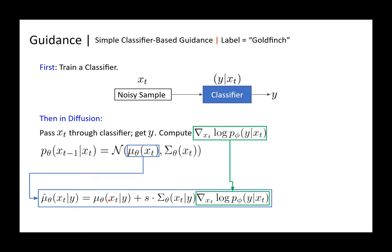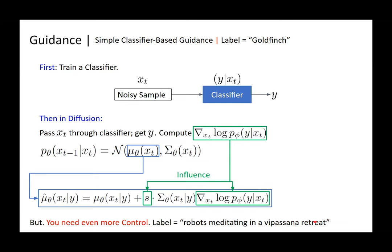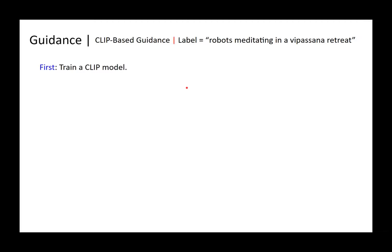The scale factor lets you control how much guidance you want. But the problem with classifier-based guidance is you're limited to a single class label — what if you want a more detailed scene like 'robots meditating in a persona retreat'? To handle that, you can train a more robust guidance model, such as a CLIP-based guidance model.